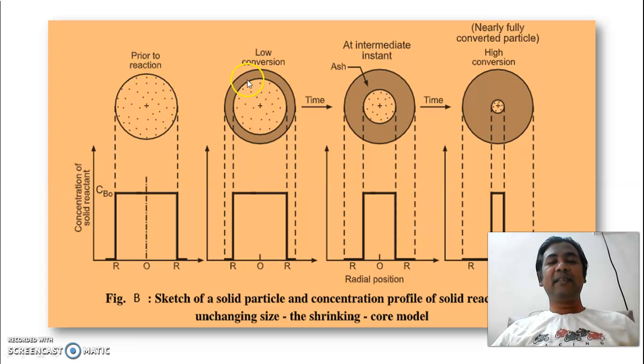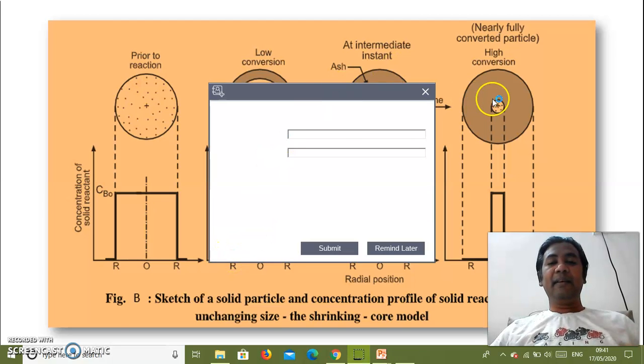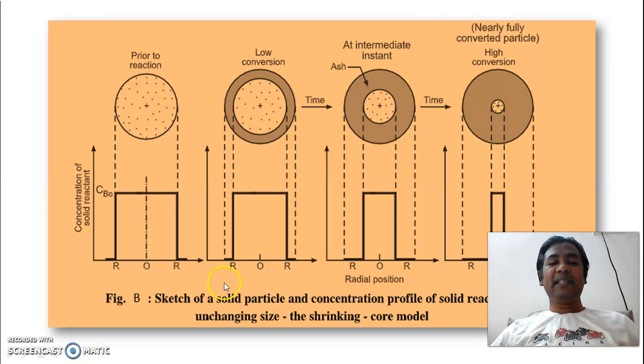So, as time progresses, you can see this thickness is there. This is the consumed surface, thickness of the consumed surface. And this is unreacted core. Unreacted core means where your reactant A is not approached right now. You can see this box representing the concentration of the reactant. Its height is same everywhere. But its thickness is changing with respect to the particle, unreacted particle.